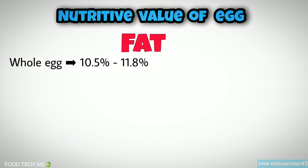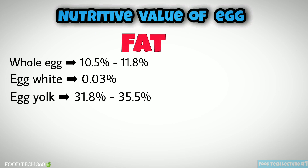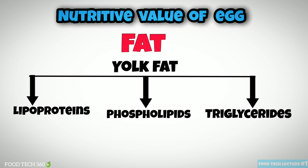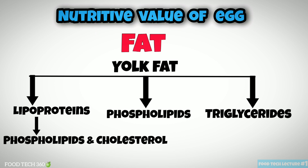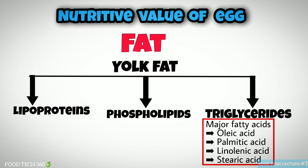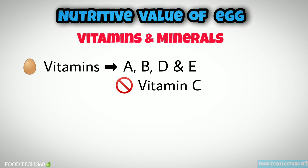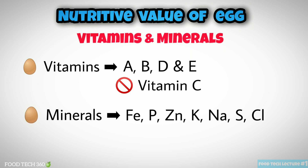Whole egg contains 10.5 to 11.8% fat. Egg white contains only 0.03% fat. Egg yolk contains 31.8 to 35.5% fat. In yolk, fat is divided into three parts: lipoproteins, phospholipids, and triglycerides. Lipoproteins are complexed with phospholipids and cholesterol. The main phospholipid is lecithin. Major fatty acids in triglycerides are oleic, palmitic, linolenic, and stearic acid. Eggs are a good source of vitamins A, B, D, and E, but do not contain vitamin C. Minerals present in eggs are iron, phosphorus, zinc, potassium, sodium, sulfur, and chlorine.